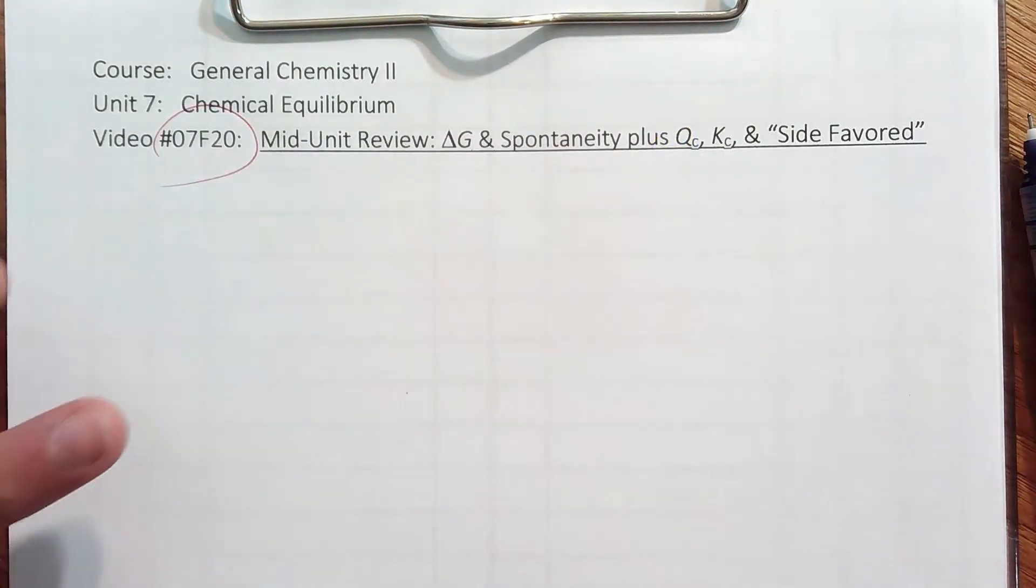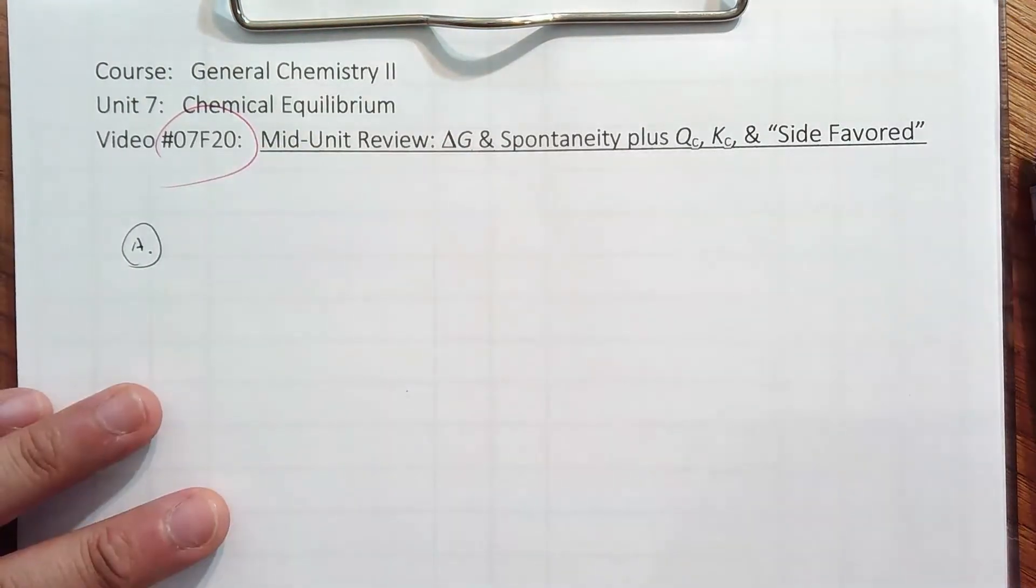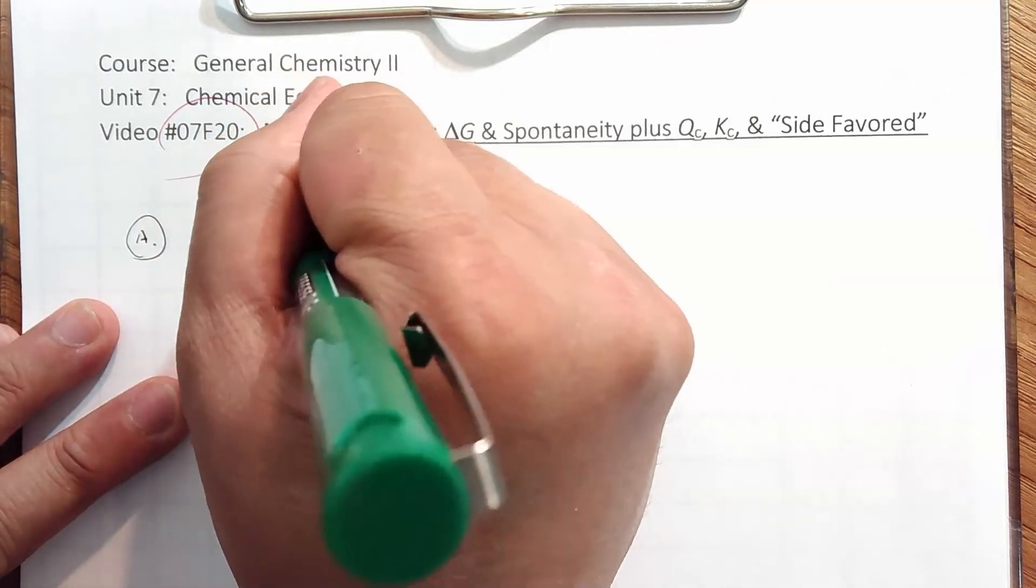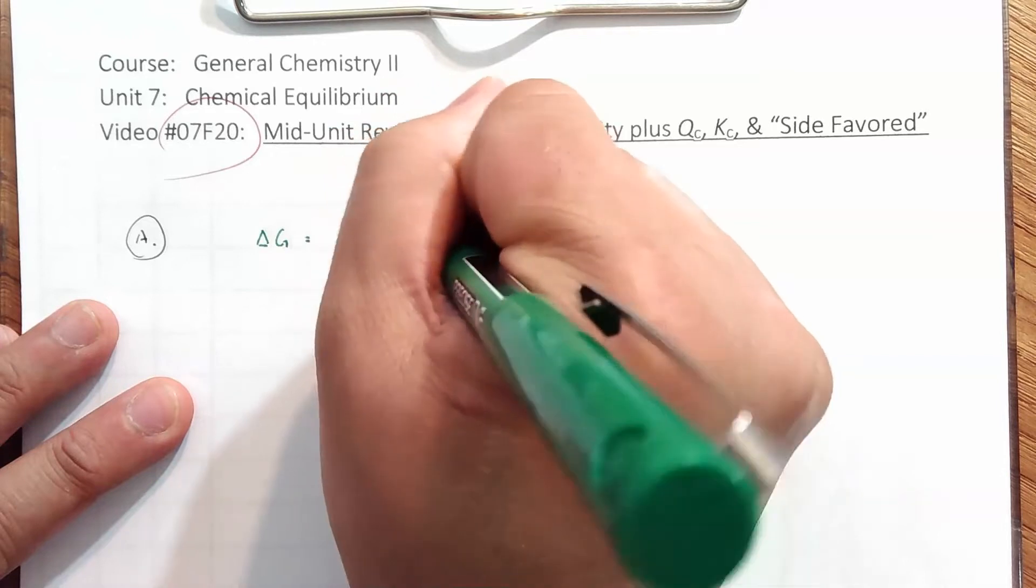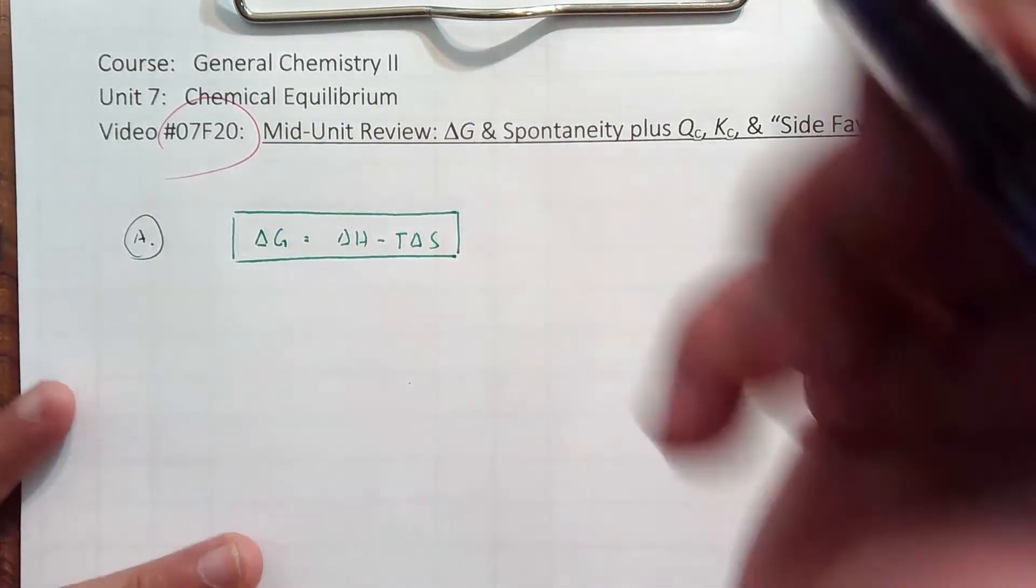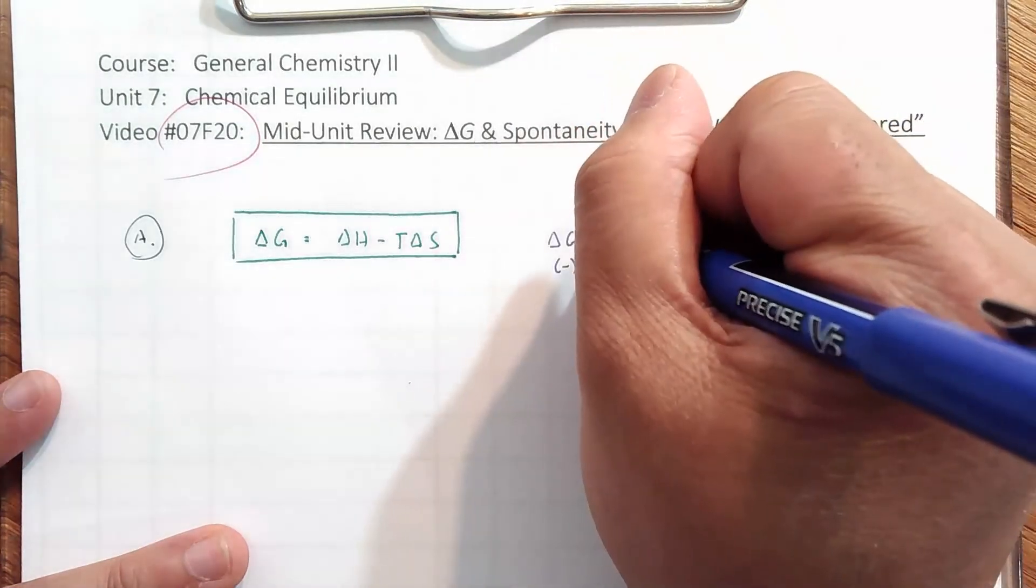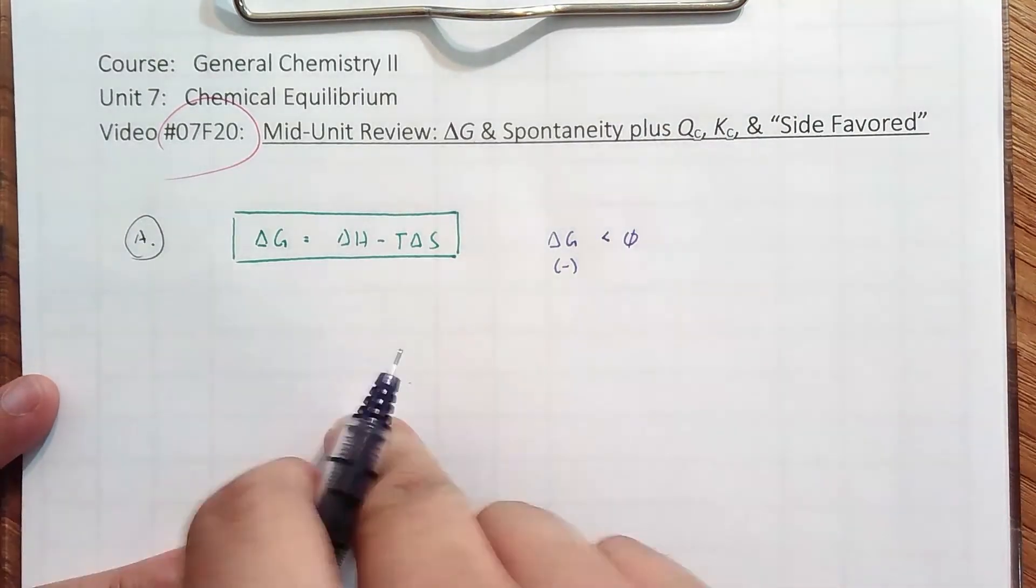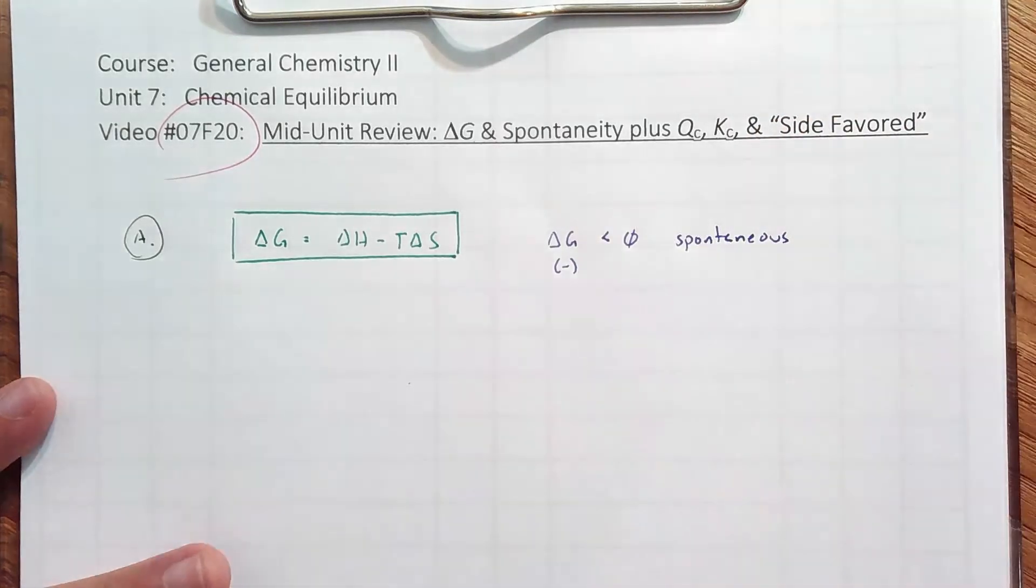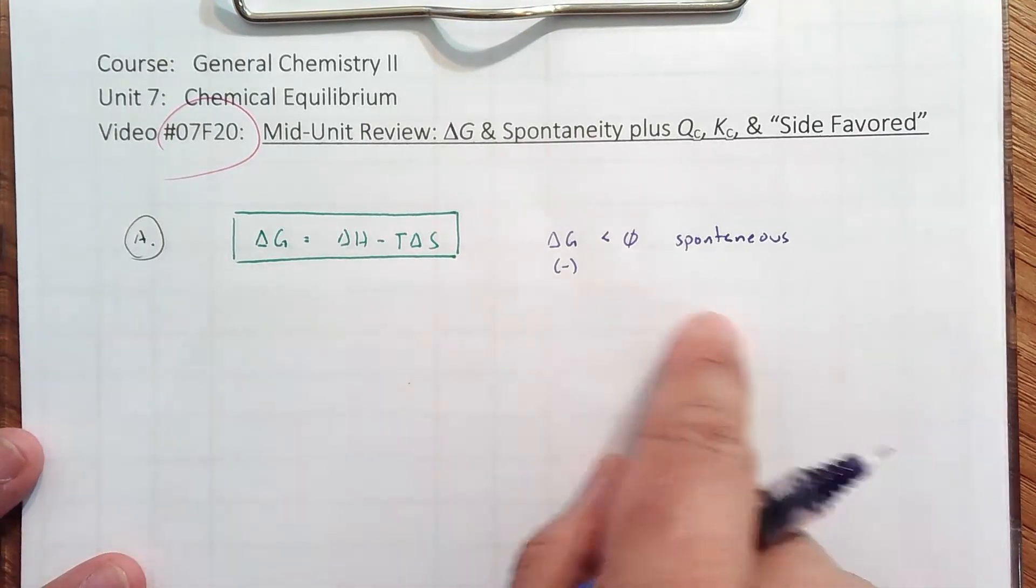First thing is, let's remind ourselves of the main delta-G equation and make sure that we are positive of what kinds of information we can gather from it. Delta-G equals delta-H minus T delta-S. If delta-G is negative, or you could say less than zero, that means that the reaction in which it's written in the forward direction is spontaneous.